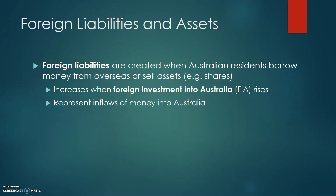You can abbreviate that as FIA, or foreign investment into Australia, and these generally represent an inflow of money into the country. In summary, foreign liabilities are created when there is an inflow of money into Australia, and that is often in the form of foreign investment.